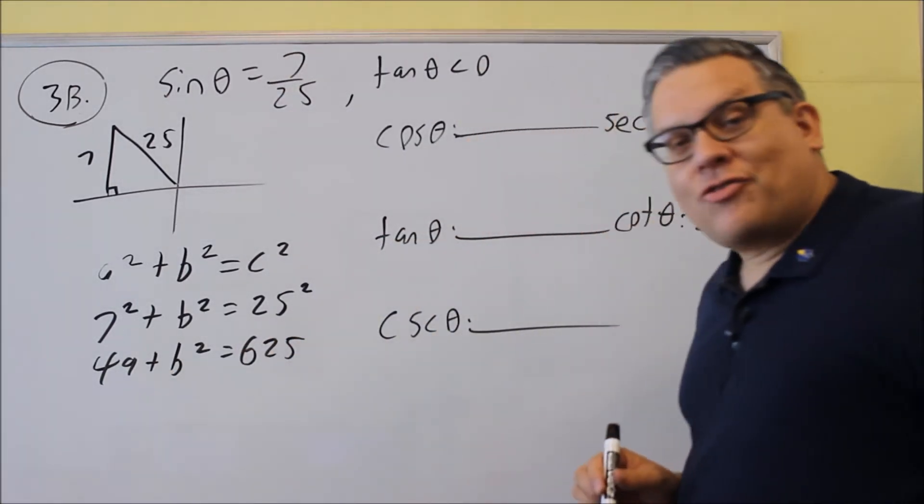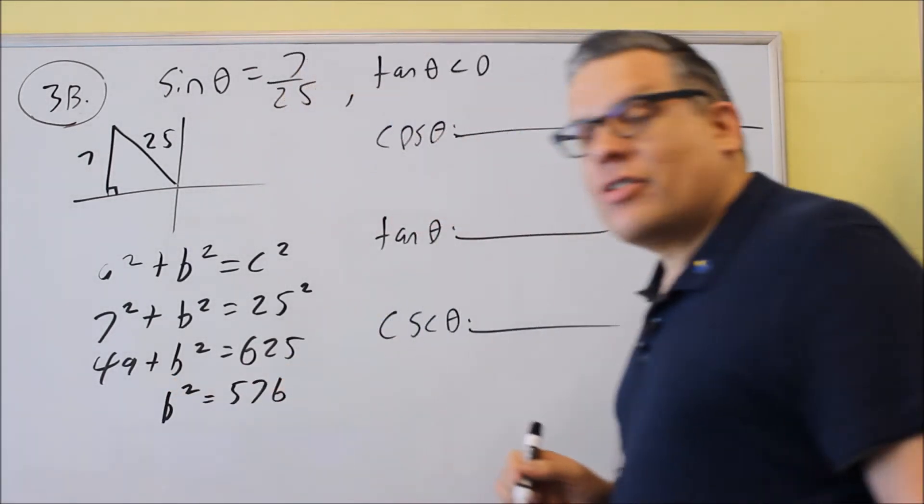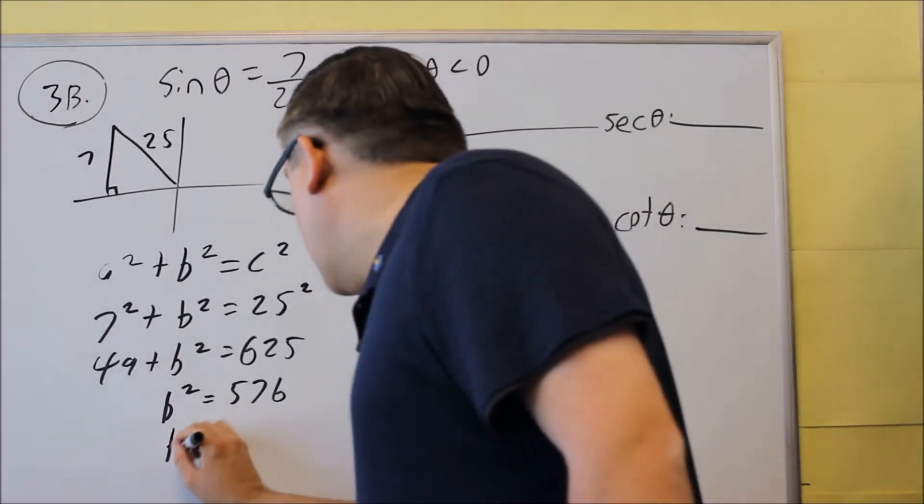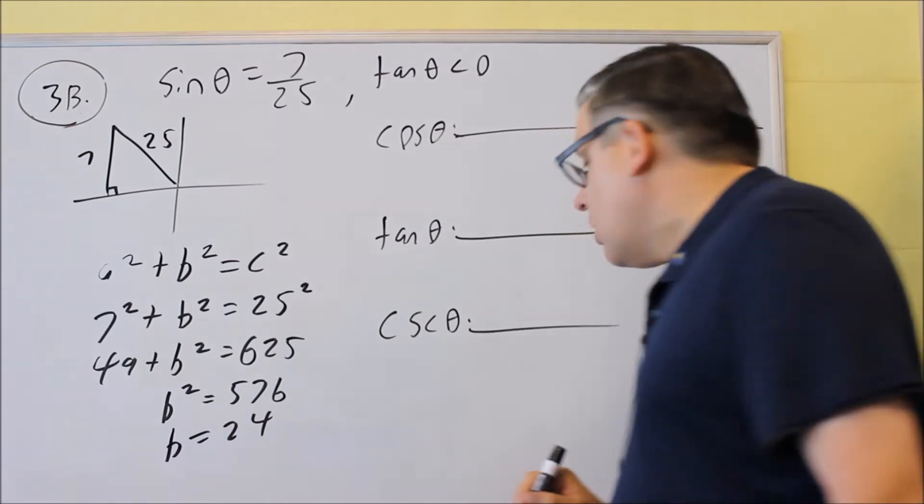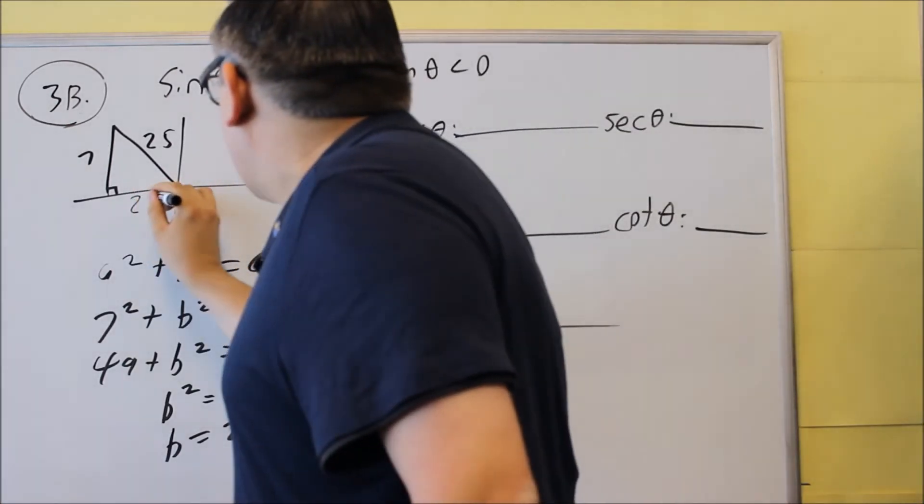We're going to subtract forty-nine from both sides. When you subtract forty-nine from both sides, you're going to get five hundred and seventy-six. Square root both sides, and you get b is equal to twenty-four. So twenty-four is the missing side, and that's right here.